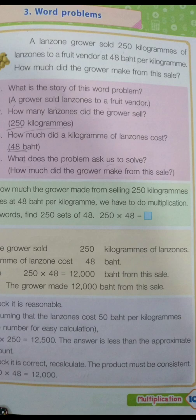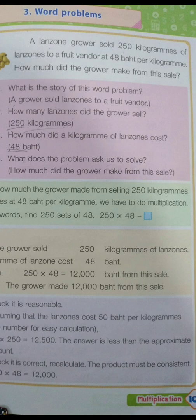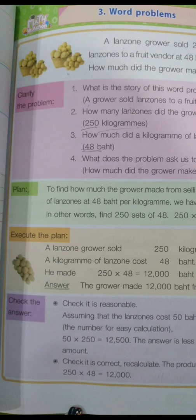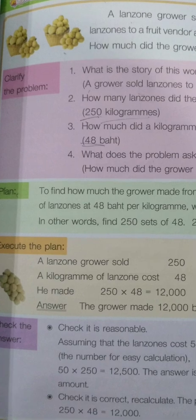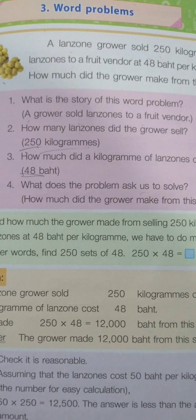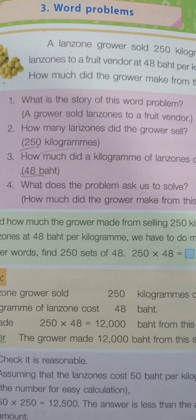A lanzones grower sold 250 kilograms of lanzones to a fruit vendor at 48 baht per kilogram. How much did the grower make from this sale? To clarify the problem: the story of this word problem is that a grower sold lanzones to a fruit vendor.